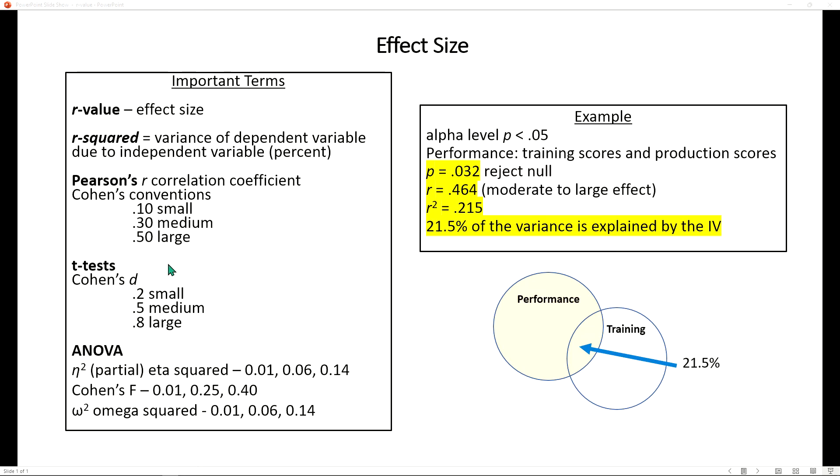For t-tests, Cohen's D is used: 0.2 small, 0.5 a medium or moderate effect, and 0.8 is large.